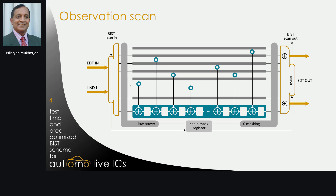One of the questions that arises is how this scheme is different from techniques such as circular BIST. There is a fundamental difference between the schemes. In circular BIST, the scan cells were not only capturing responses but also driving combinational logic during shift. This creates a sequential dependency between subsequent shift cycles, thereby making fault simulation extremely complex. In the proposed scheme, the observe points are only observing the test responses and don't provide any stimuli to the combinational gates, which reduces the complexity of fault simulation.